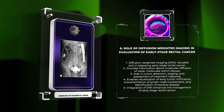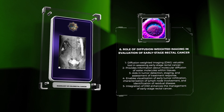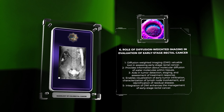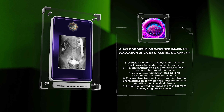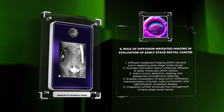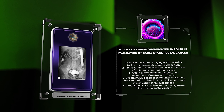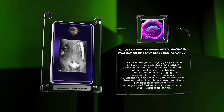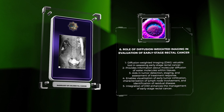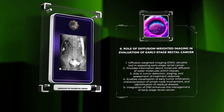Diffusion-weighted imaging (DWI) is a valuable tool in the assessment of early-stage rectal cancer. This MRI technique provides information about the molecular diffusion of water molecules within tissues, reflecting their cellular density and integrity. DWI can aid in tumor detection, staging, and assessment of treatment response, as it enables visualization of early tumor infiltration, characterization of lymph node involvement, and identification of residual disease after neoadjuvant therapy.